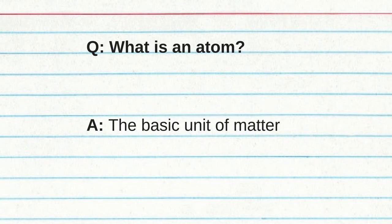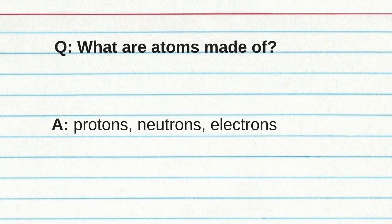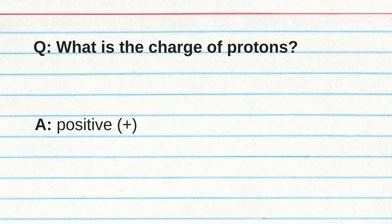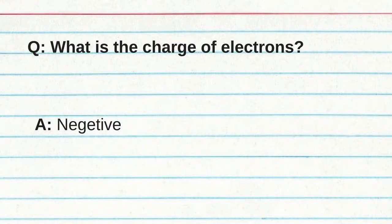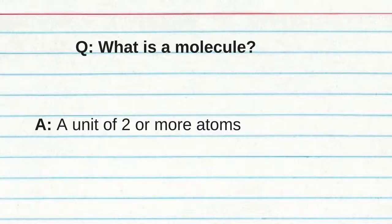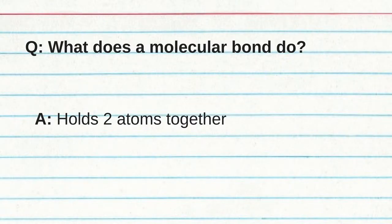What is an atom? The basic unit of matter. Atoms are made out of protons, neutrons, and electrons. Protons are positive, neutrons are neutral, and electrons are negative. What is a molecule? A unit of two or more atoms. A molecule bond holds two atoms together.